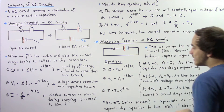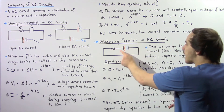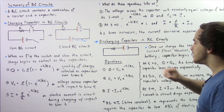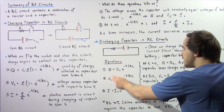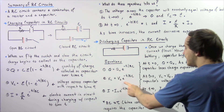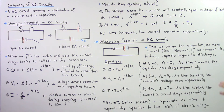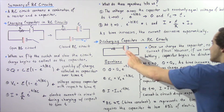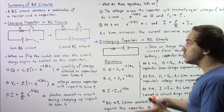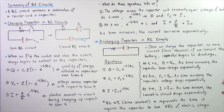Equation two tells us how the voltage drops across our capacitor as it loses charge. The voltage VC across our capacitor equals our initial voltage V-naught multiplied by E to the power of negative T divided by RC. At time equals zero, VC equals V-naught. As time increases, the capacitor's voltage drops exponentially.